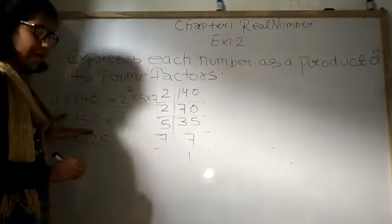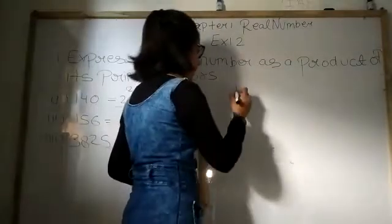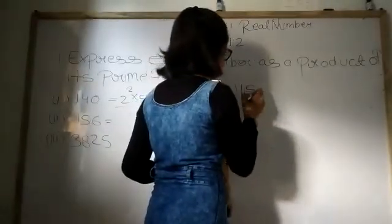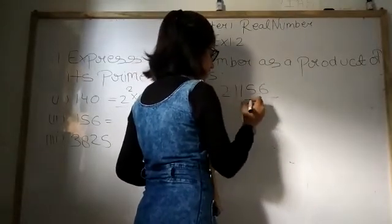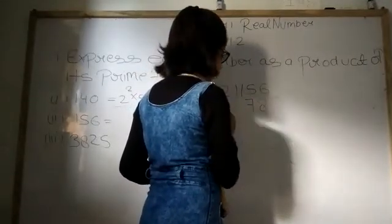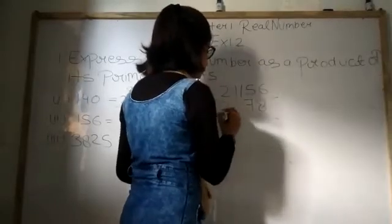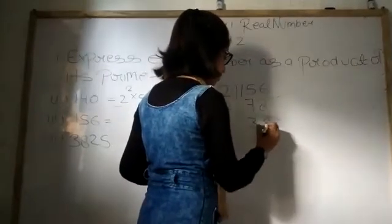Now what is our next number? That is 156. So by which number can it be divisible? That is 2. 2 times 78 is 156. Now once again by 2. 2 times 39 is 78.